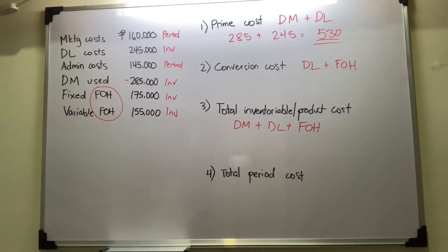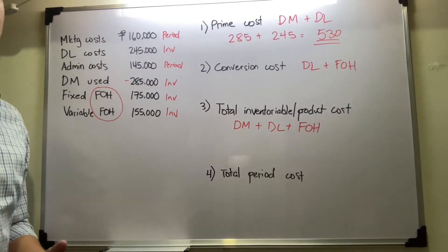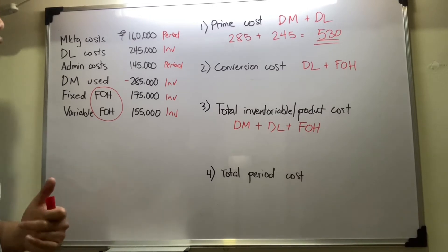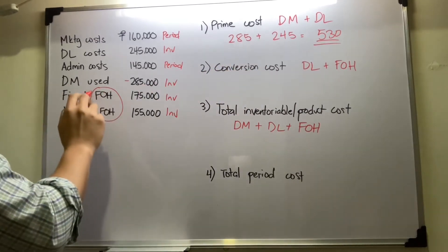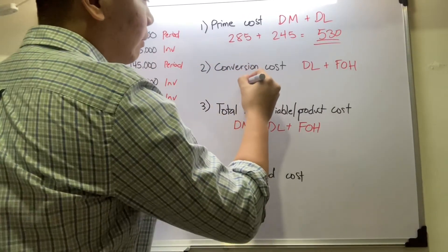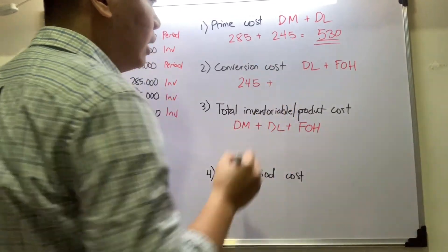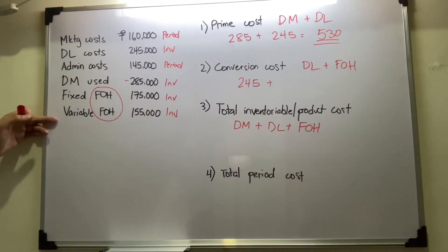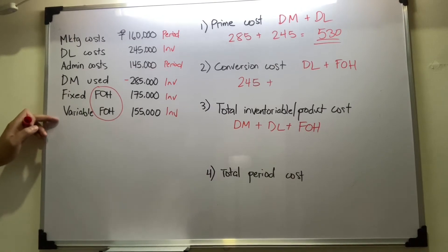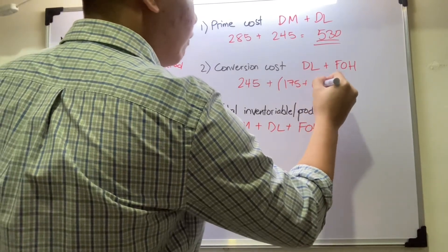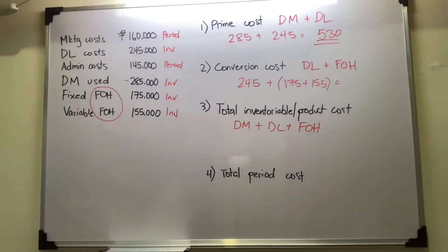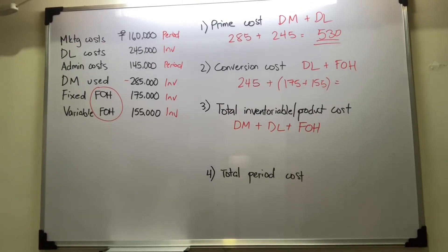For conversion cost, the formula is direct labor plus factory overhead, inclusive of fixed and variable. So you take direct labor of 245,000 plus fixed factory overhead of 175,000 plus variable factory overhead of 155,000. The total conversion cost would be 575,000 pesos.